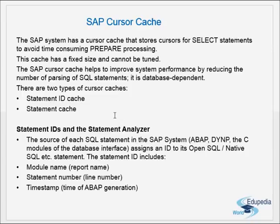The source of each SQL statement in the SAP system — whether ABAP or DYNPRO — assigns an ID to its open or native SQL statement. The ID includes the module name (the report name), the line number, and the timestamp of the ABAP generation. So every SQL statement has an ID that contains the report name, the statement line number, and the timestamp at which the ID is generated.